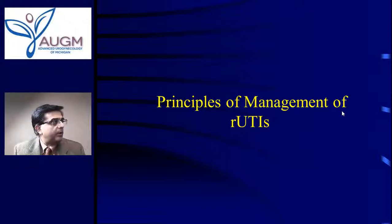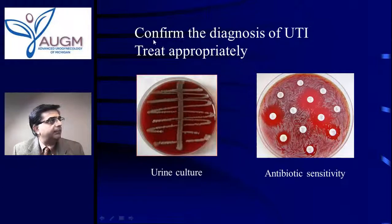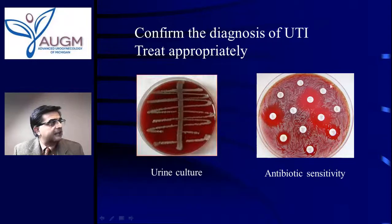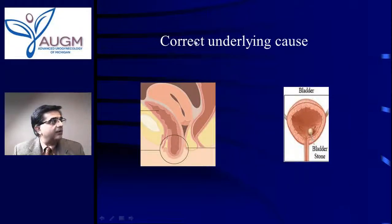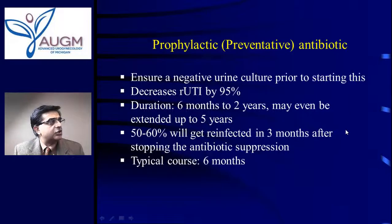Once we do the evaluations — urine analysis, urine culture, examination to make sure she's emptying her bladder well without retention, and addressing any of the causes we discussed — we look at how to manage this. The principles of management: confirm the diagnosis and treat appropriately using agar culture to determine which antibiotic kills the bacteria best. Address any underlying cause such as retention, prolapse preventing emptying, or a stone that needs to be removed.